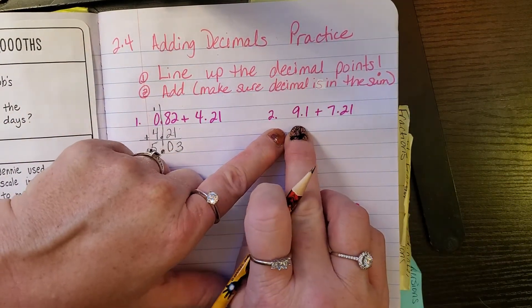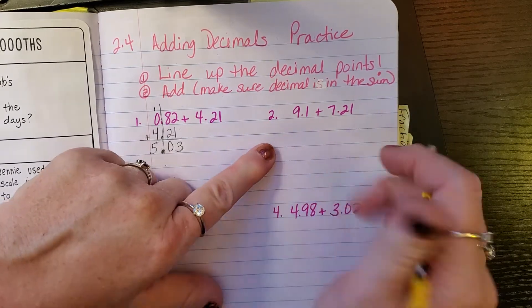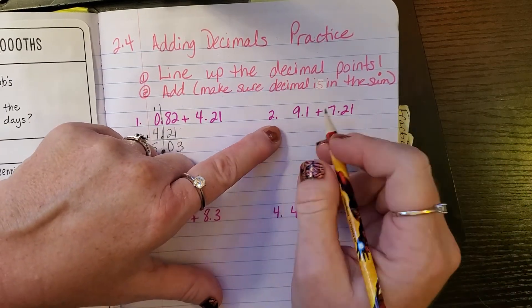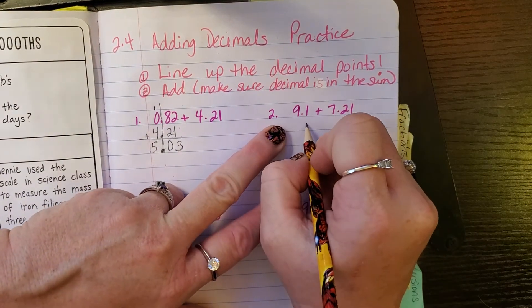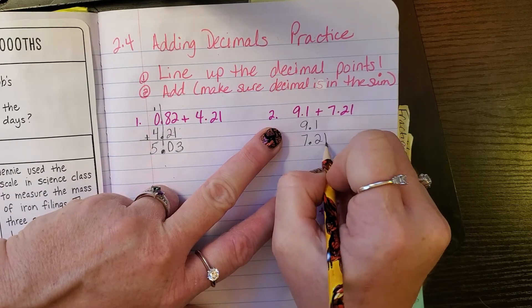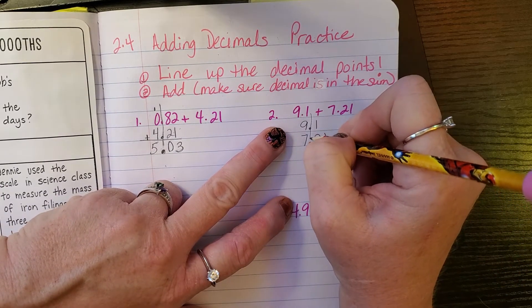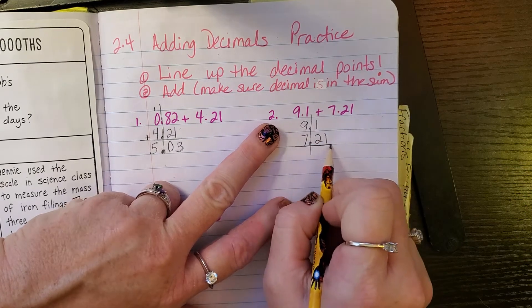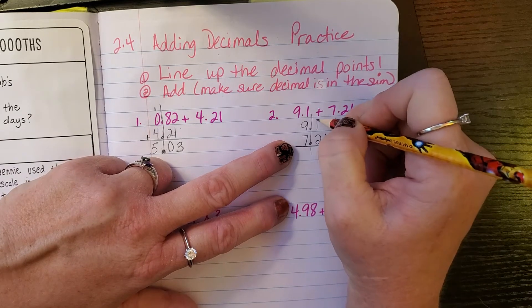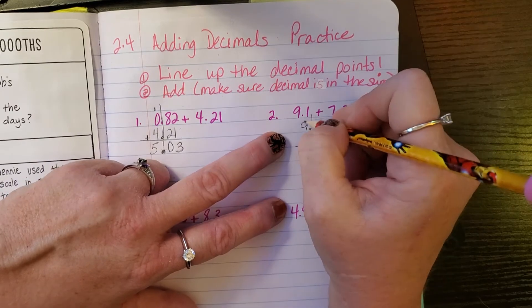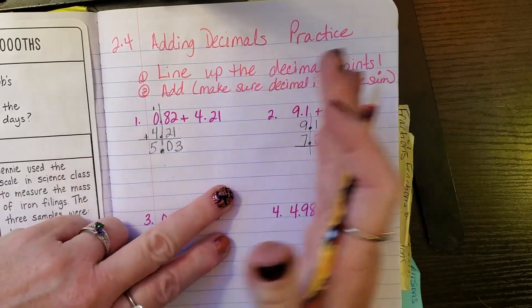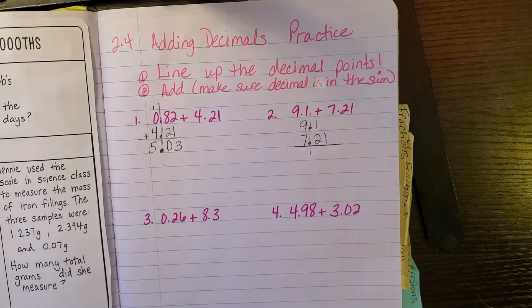Second problem: 9.1 plus 7.21. I'll rewrite this one: 9.1 on top and 7.21 underneath. Notice how I lined up the decimals. I'm also lining up by place value — this is the hundredths place, this is the tenths place, and this is the ones place. Lining up the decimal point allows us to line everything else up in place value order.